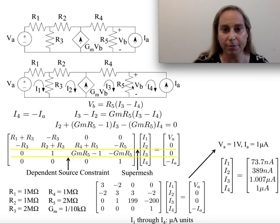What are a couple things I know about this structure? Well, right off the bat, I know that I4 goes this way. I've got a current source going the other way. So I know that I4 is going to be equal to minus Ia.